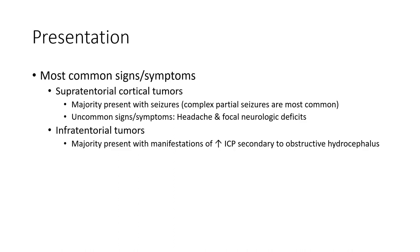Most common signs and symptoms: these are cortical tumors, and the majority present with seizures — complex or partial seizures being most common. It is uncommon to have focal neurological deficits. Infratentorial lesions may present with features of increased intracranial pressure secondary to obstructive hydrocephalus.